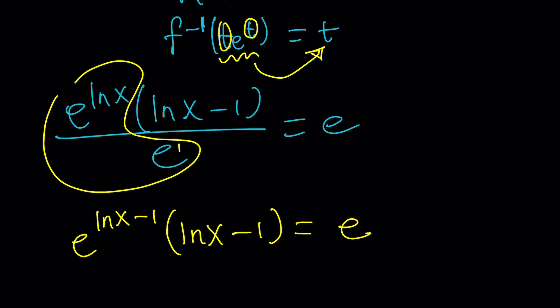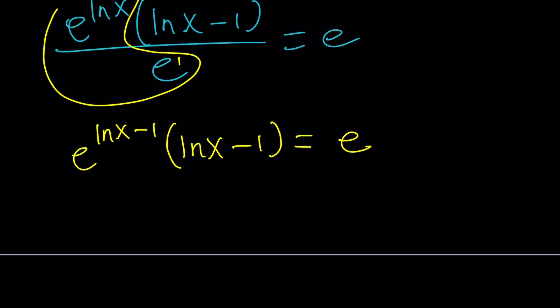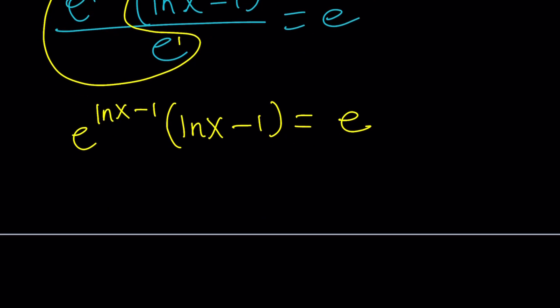So now we have it in this form, T e to the t. But what is T? T is ln x minus 1. Don't get me wrong. This is not T. This is T. This is e to the t. Make sense?